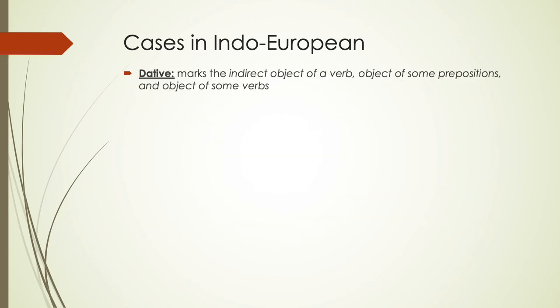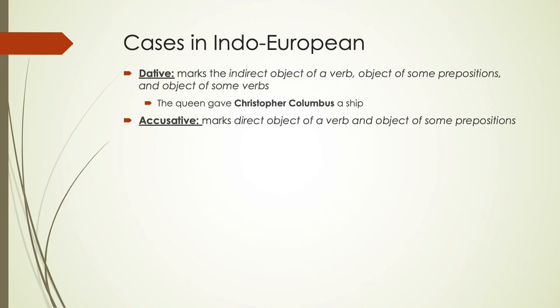Dative case marks the indirect object of a verb, also the object of some prepositions. For example, 'the queen gave Christopher Columbus a ship' — Christopher Columbus is the indirect object and would be marked dative. Accusative marks the direct object of a verb and the object of some prepositions. If there is no indirect object and only one object, you'd expect accusative case. So in 'Snow White ate the apple,' the apple would be accusative.